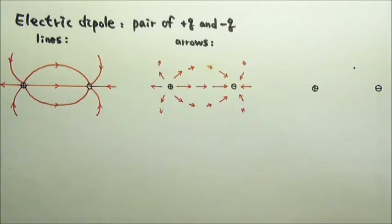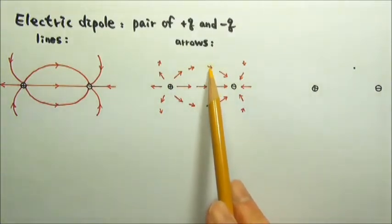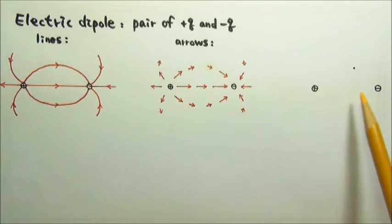Another way to find the electric field at, say, this point, is to look at the field produced by each charge.